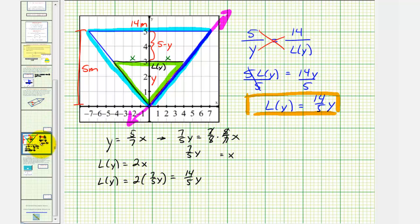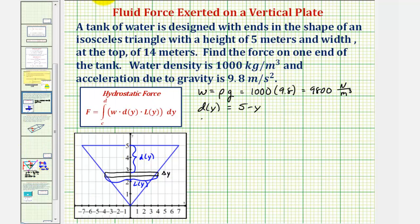But now that we have L(y), we can now determine the total force on this end. The total force F is equal to the integral of the weight density, which is 9800 times D(y), the quantity 5 - y times L(y), which is (14/5)y, integrated with respect to y, from the bottom of the tank to the top or from zero to five along the y-axis.